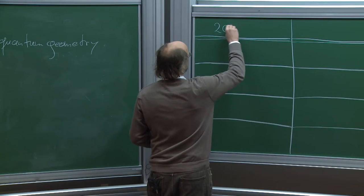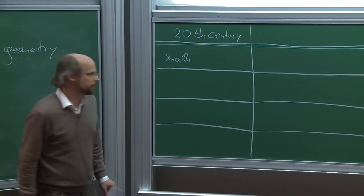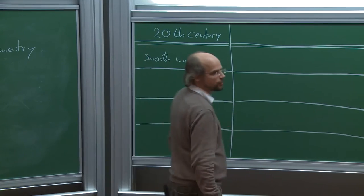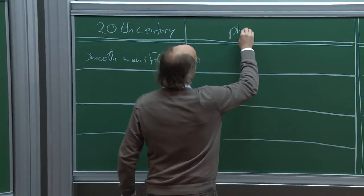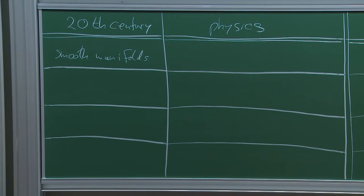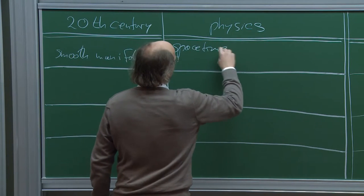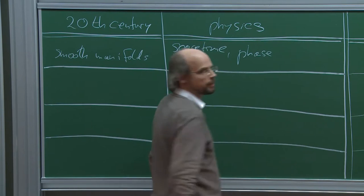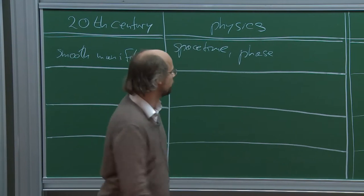So what did it mean in the 20th century? Differential geometry starts with the concept of smooth manifolds. I'm going to make some connections with physics, even though this talk will be just about the math. In physics, smooth manifolds represent space-time, but they also represent phase spaces — spaces of states of classical and, with some extra bells and whistles, quantum systems.